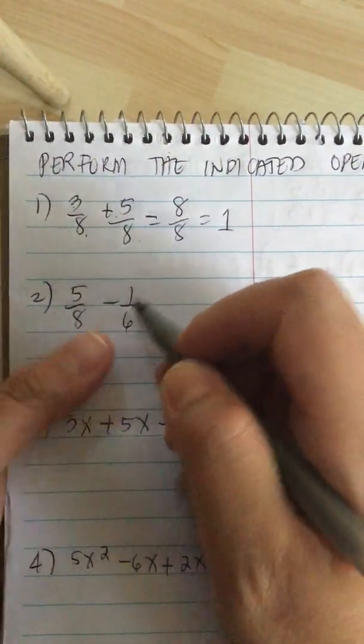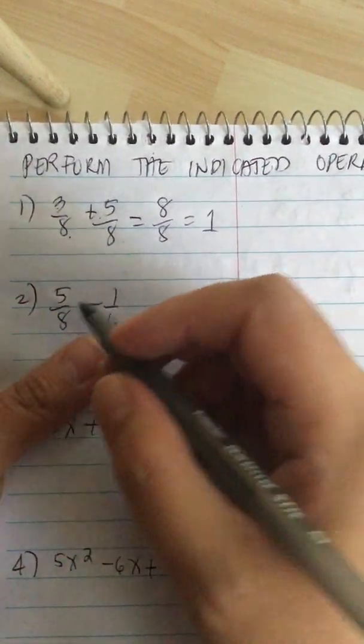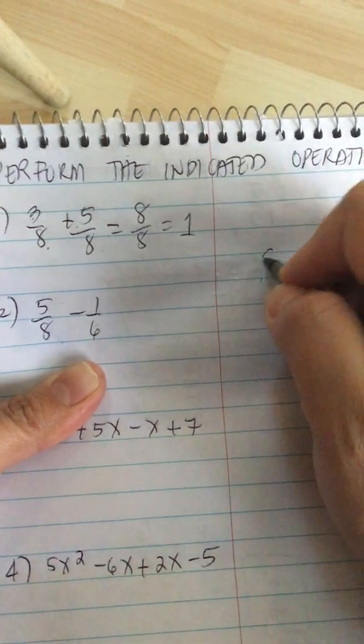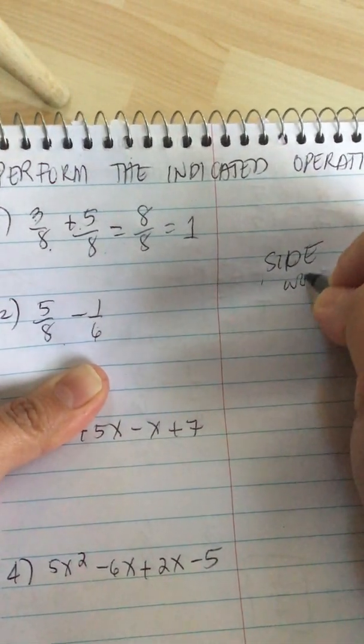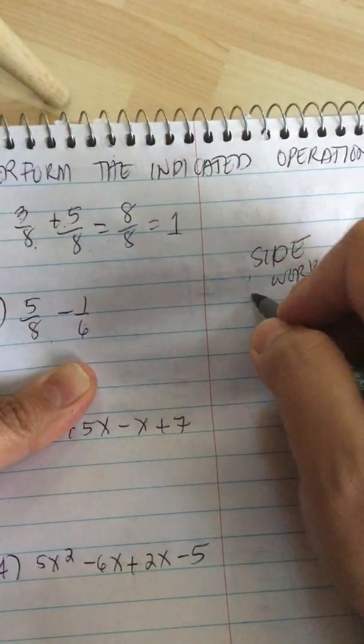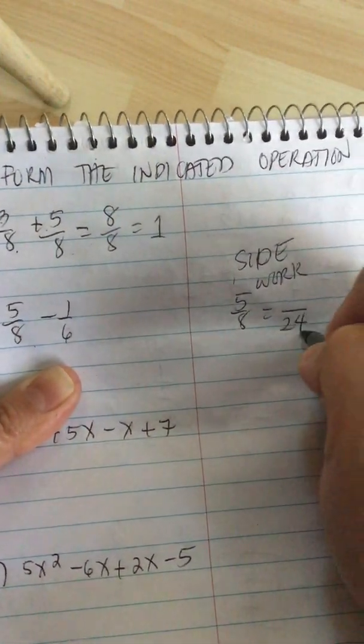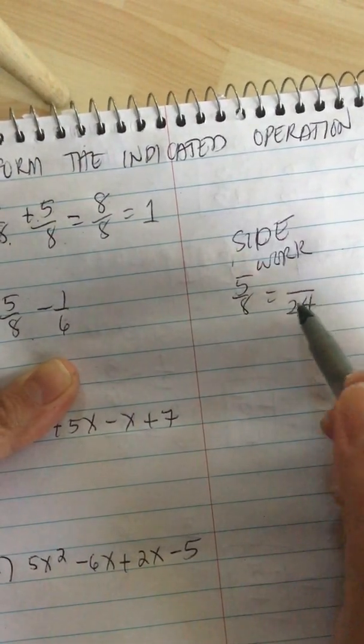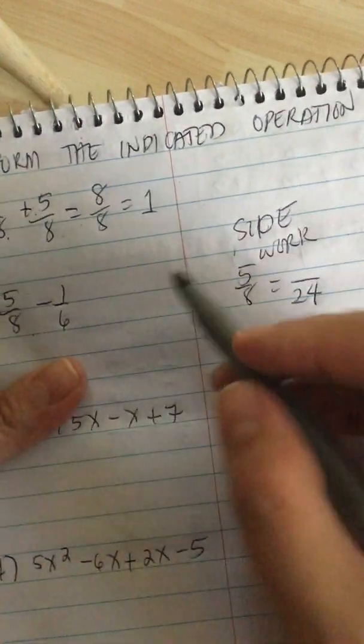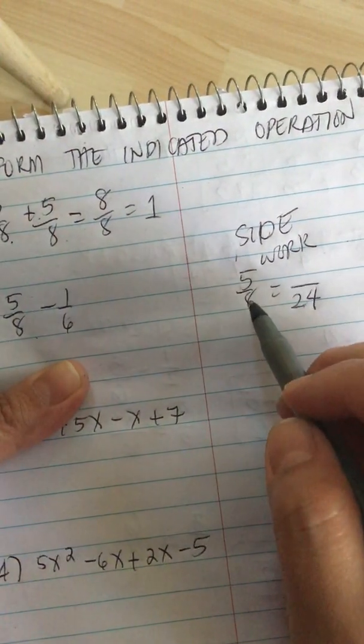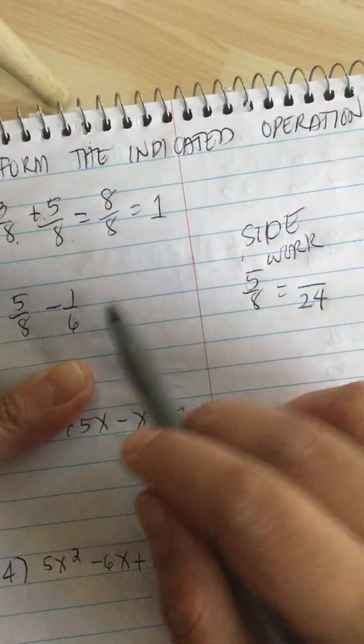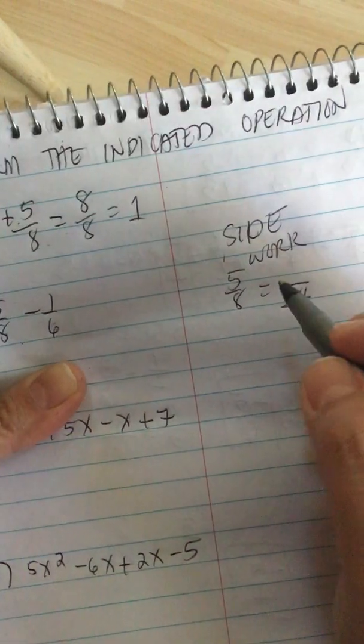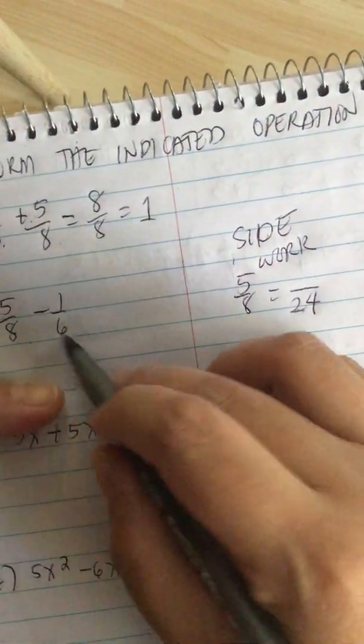Number 2: 5/8 minus 1/6. You don't have the same denominator, so we have to find the LCM, which is 24. So side work, we have 5/8 into something over 24. Now the LCM is the lowest possible number that both of them will divide into evenly. So 24 will divide into 8 evenly, and 24 will divide into 6 evenly. So 24 is the lowest number that will divide into both of these denominators.